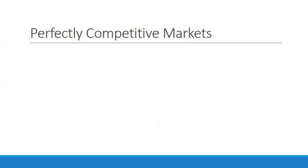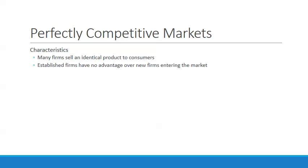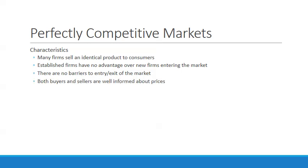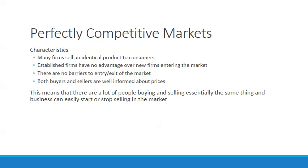The first market we'll examine is the perfectly competitive market. From a characteristic standpoint, many firms sell an identical product to consumers, and established firms have no advantage over new firms entering the market — because the product is identical, there's no advantage. There are no barriers to entry or exit, and both buyers and sellers are well-informed about prices since they have no way to influence price.